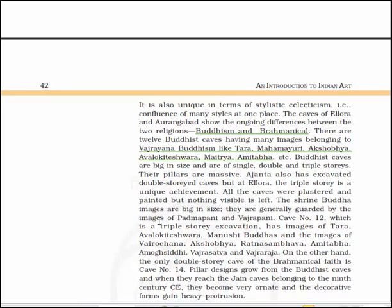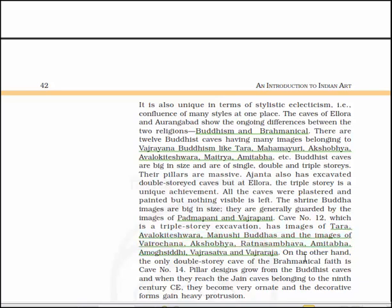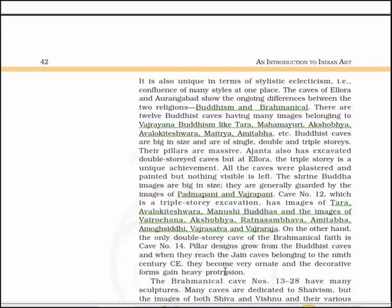The shrine Buddha images are big in size, generally guarded by images of Padampani and Vajrapani. Cave number 12, which is a triple-storied excavation, has images of Tara, Avalokiteshvara, Manushi Buddha, and images of Vajrayana deities — Vajrajana, Akshobhya, Ratanasambhava, Amitabha, Amoghasiddhi, Vajrasattva and Vajraraja. The only double-storied cave of Brahminical faith is cave number 14. Pillar designs grow from Buddhist caves and when they reach the Jain caves belonging to the 9th century, they become very ornate and decorative forms gain heavy protrusion.